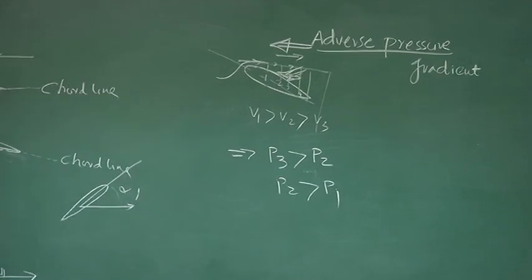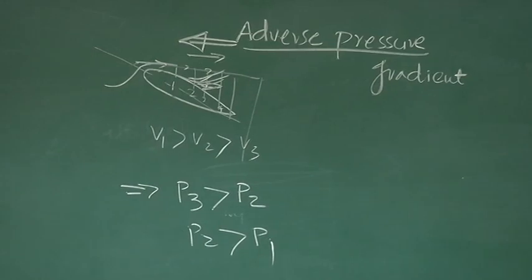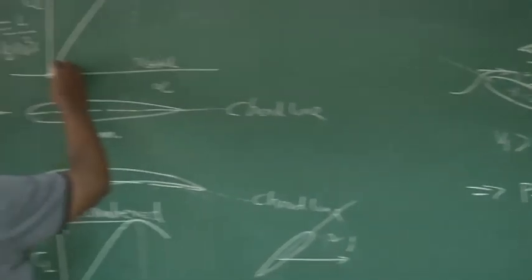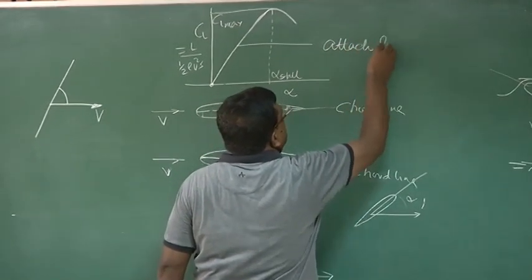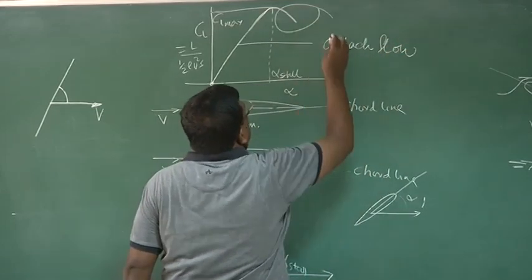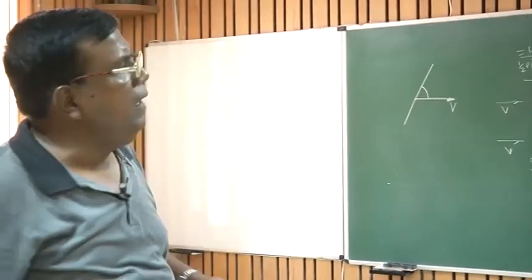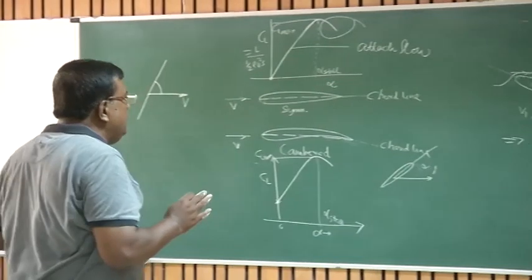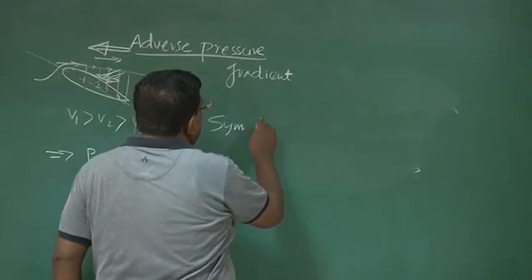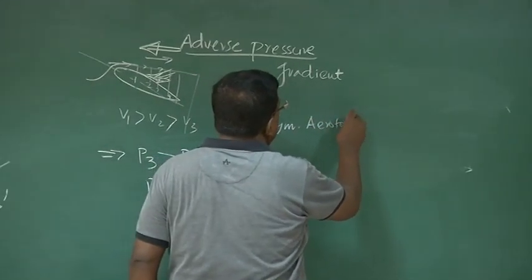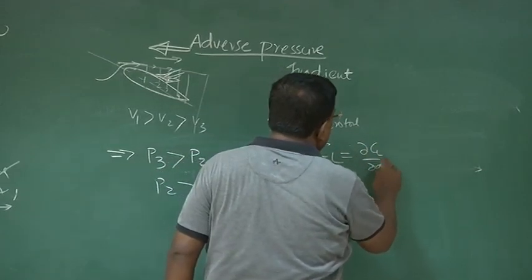Stall is much more than this, but we need to know that when we are talking about the linear zone, we are talking about attached flow. When we talk about the separated region, there is a subject of aerodynamics to explain all these things, but we are not going deep into it. We only need to understand that for a symmetric aerofoil, I can write the model: CL = (dCL/dα) × α.